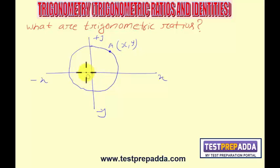This as O. If I join O with A, this OA is actually radius of the circle, right angle triangle. Now, if I drop a perpendicular from this point A on this x axis,